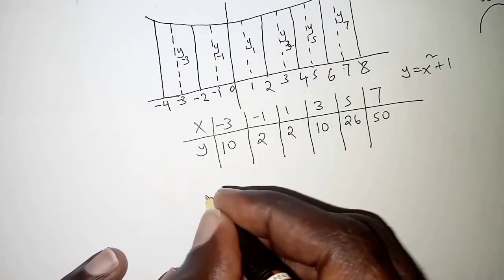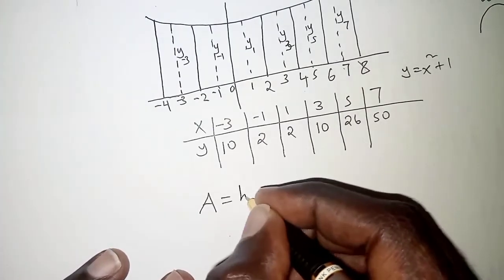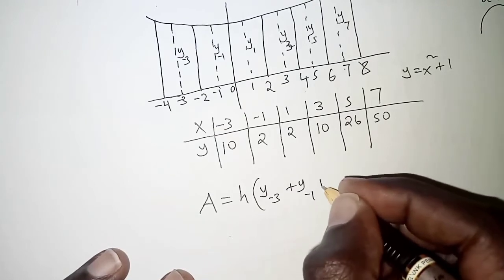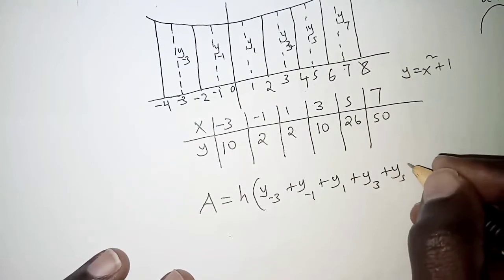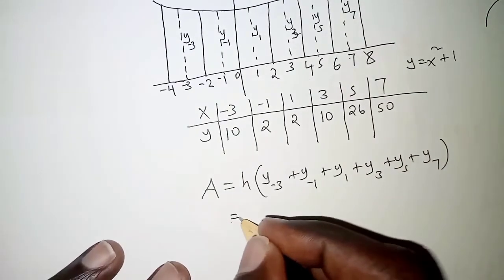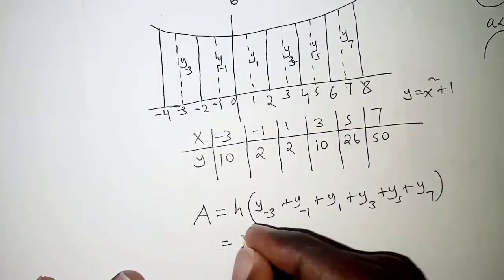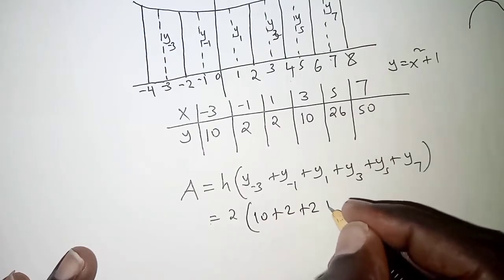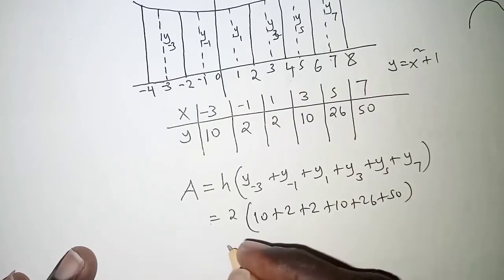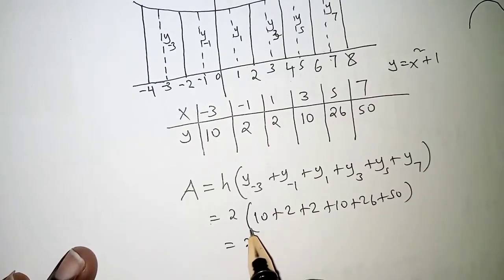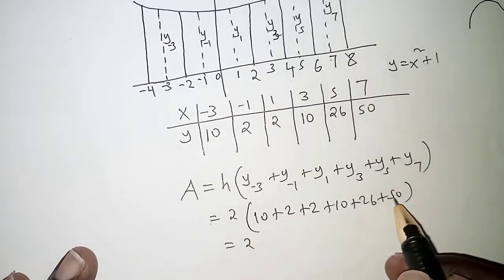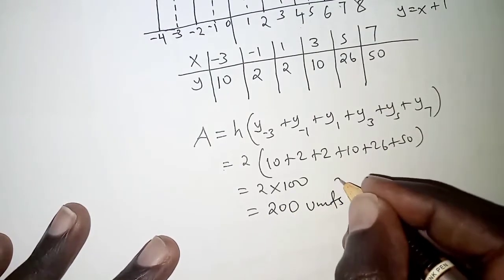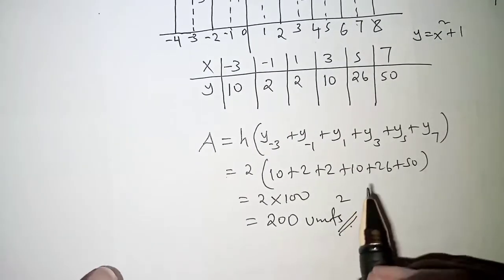With that we can apply the mid-ordinate rule, which states that area equals h times the sum of the mid-ordinates: h × (y at x=−3 + y at x=−1 + y at x=1 + y at x=3 + y at x=5 + y at x=7). So we have h = 2, and the sum is 10 + 2 + 2 + 10 + 26 + 50 = 100. Multiplying gives us 200 square units.